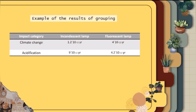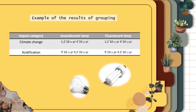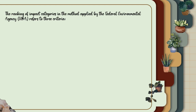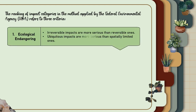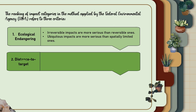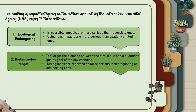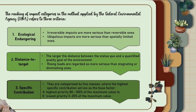This is an example of the results of grouping. The ranking of impact categories in the method applied by the Federal Environmental Agency, UBA, refers to three criteria. 1. Ecological endangering: irreversible impacts are more serious than reversible ones; ubiquitous impacts are more serious than spatially limited ones. 2. Distance to target: the larger the distance between the status quo and a quantified quality goal of the environment; rising loads are regarded as more serious than stagnating or diminishing ones. 3. Specific contribution: they are categorized by five classes where the highest specific contribution serves as the base factor.